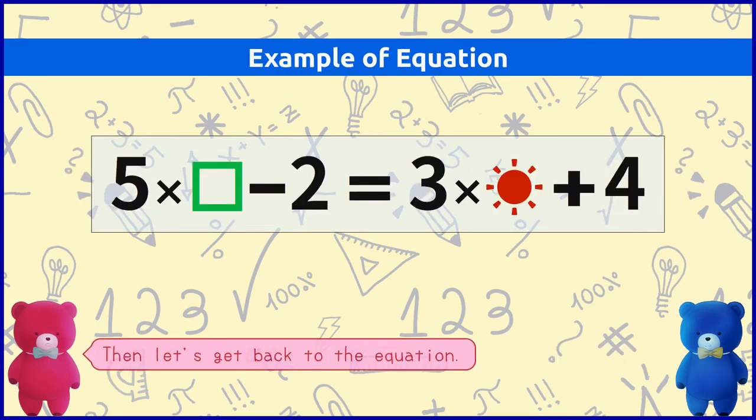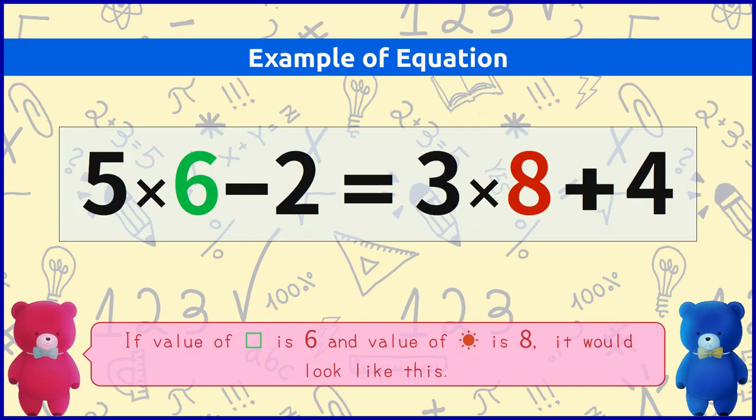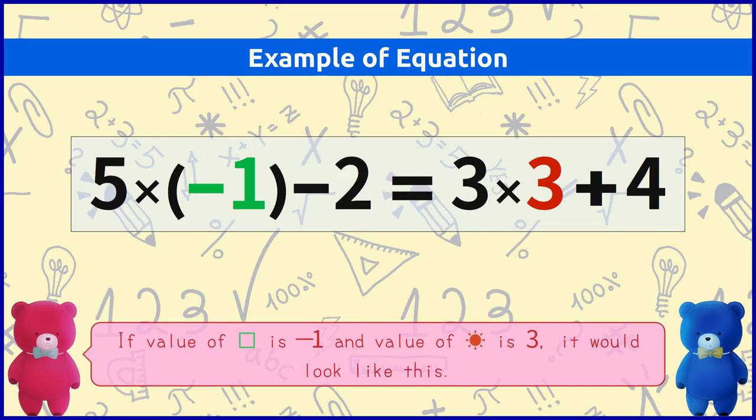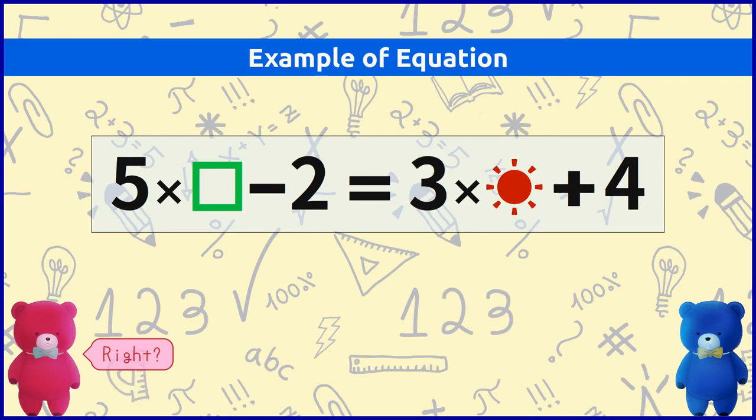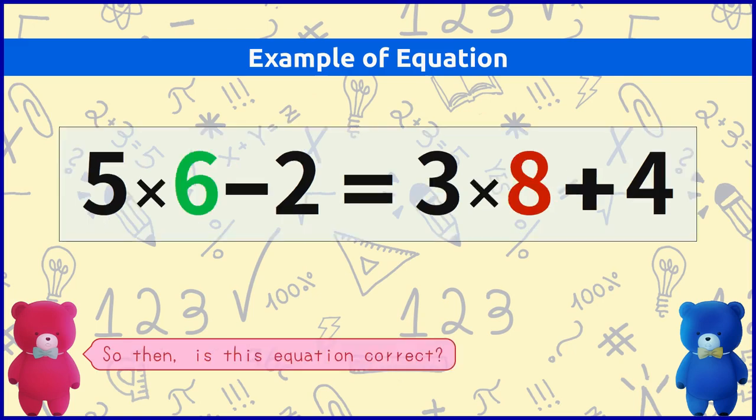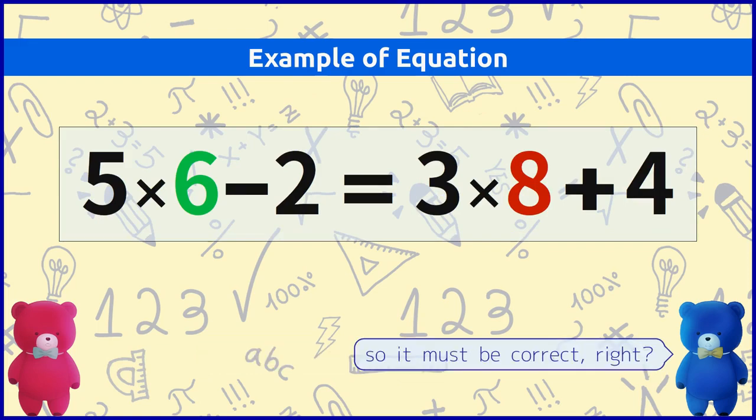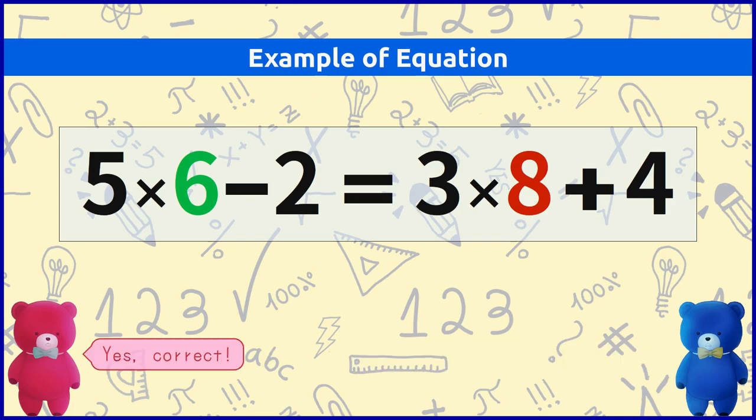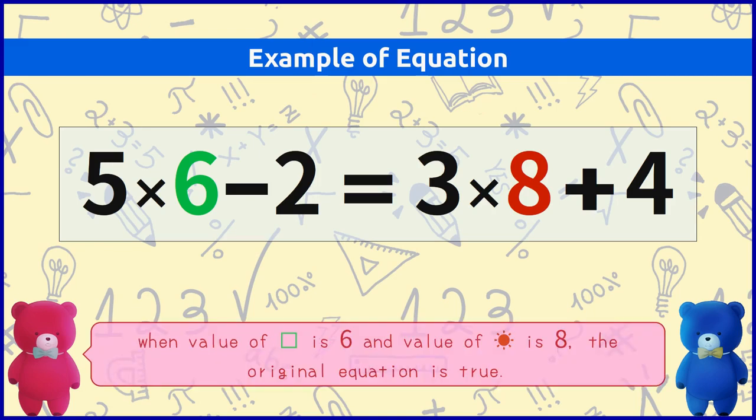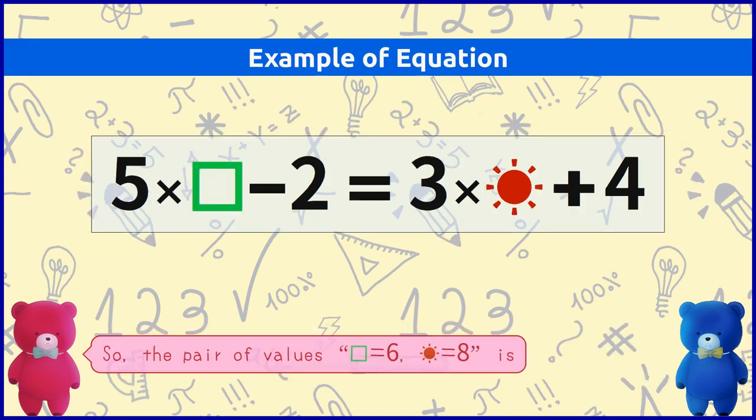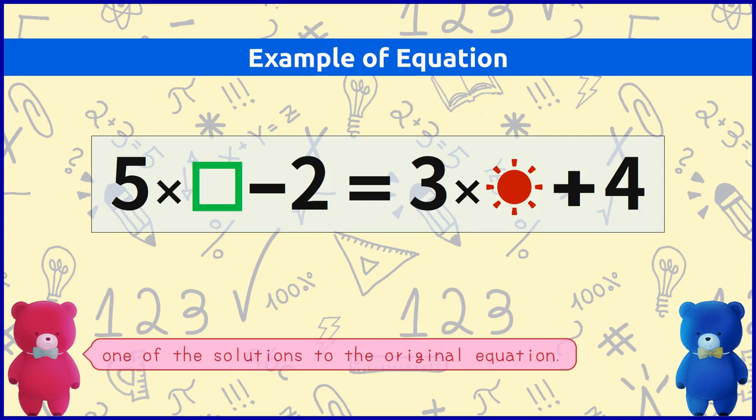Then let's get back to the equation. Okay. With this equation if value of square is 6 and value of sunshine is 8 it would look like this. If value of square is minus 1 and value of sunshine is 3 it would look like this. Right. So then is this equation correct? Well, when calculated it turns into 28 equals 28. So it must be correct, right? Yes, correct. That means when value of square is 6 and value of sunshine is 8 the original equation is true. So the pair of values square equals 6 and sunshine equals 8 is one of the solutions to the original equation.